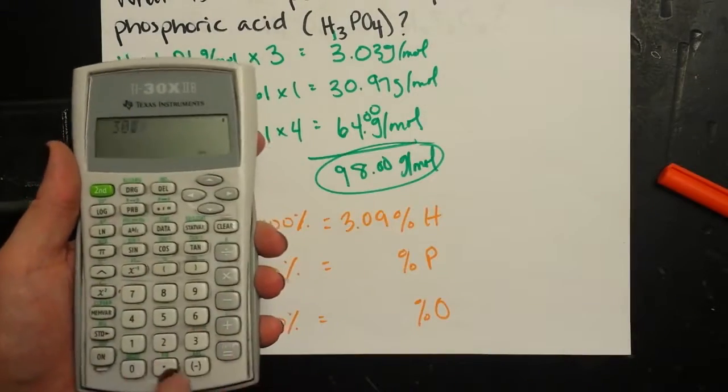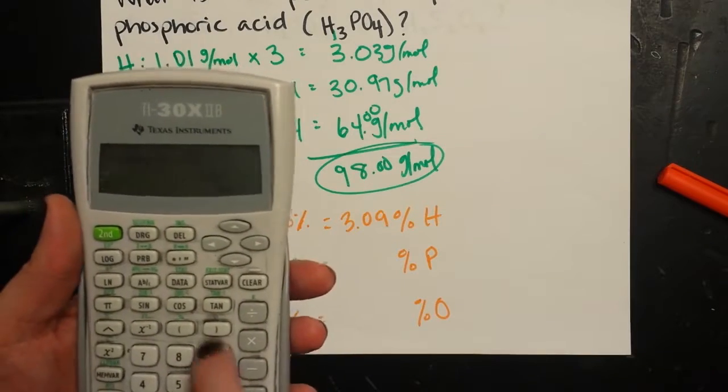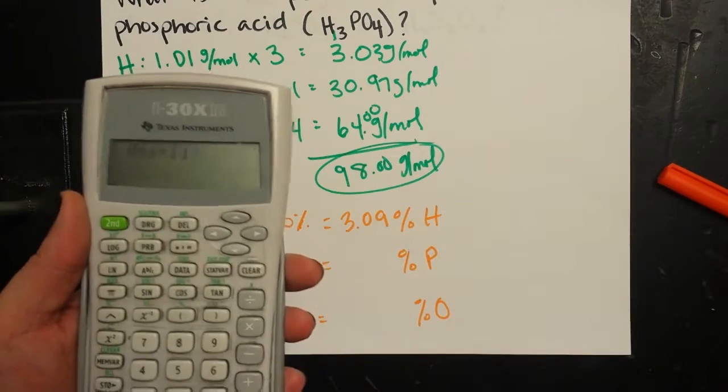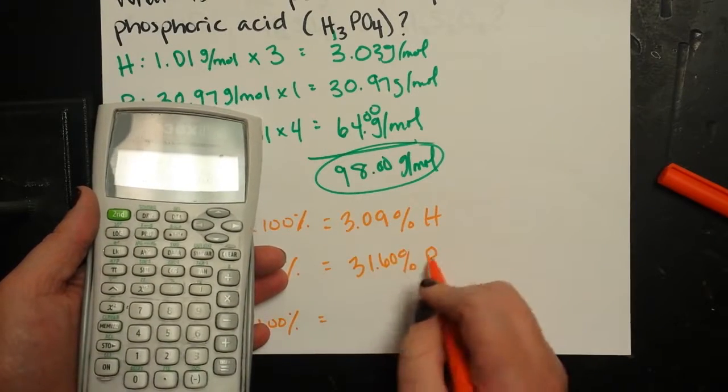For the percent phosphorus, I'm going to take 30.97 divided by 98, multiply that by 100. So 31.60% phosphorus.